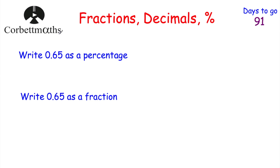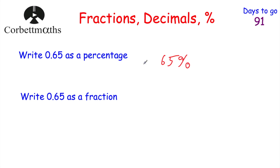Here's one for you to try yourself. Can you write 0.65 as a percentage, and can you write 0.65 as a fraction? Pause the video and give that a shot now. Okay, so to write 0.65 as a percentage, we multiply it by 100, so that'll be 65 — so it's 65%.